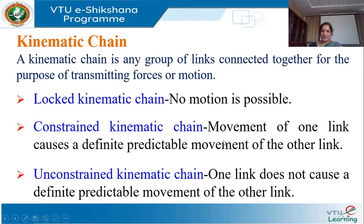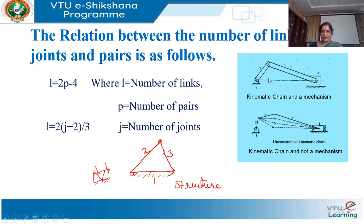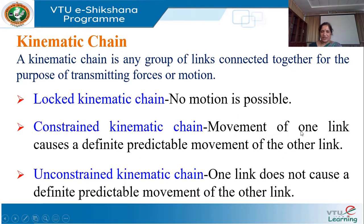In a constrained kinematic chain, the movement of one link causes a definite, predictable movement of the other links. For example, the single slider crank mechanism — if we give input to link 2, we can predict the movement of the other links. There is a definite and predictable movement of all other links. That is called the constrained kinematic chain.